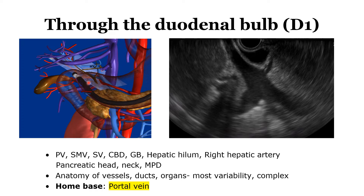These are portions of the pancreatic head area. On EOS imaging, we can see similar structures. This is the hilar area, liver area. This area is the pancreatic head area. This is the splenic vein. In this area is the pancreatic body area.